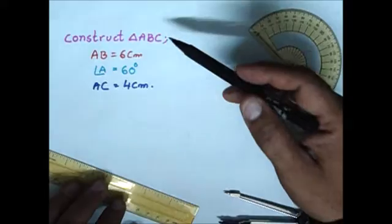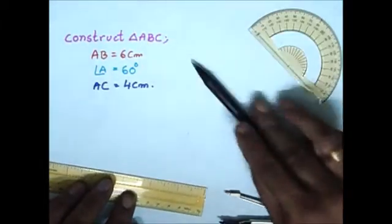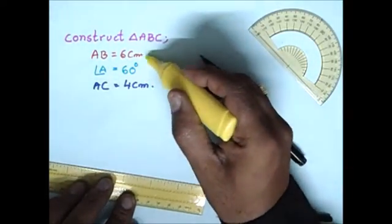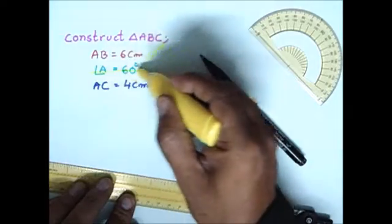Now let's start the construction of triangle ABC when the two sides are known and an angle is given as 60 degrees.